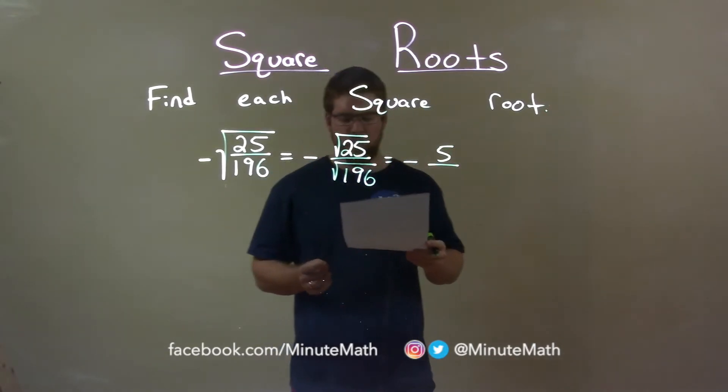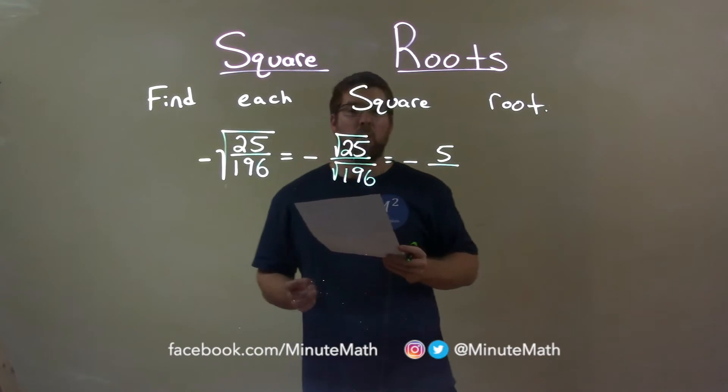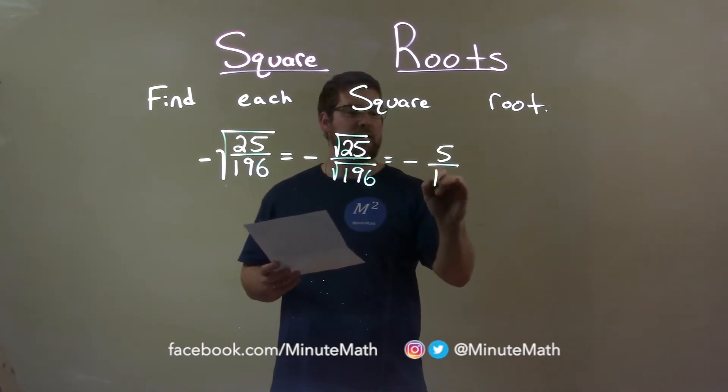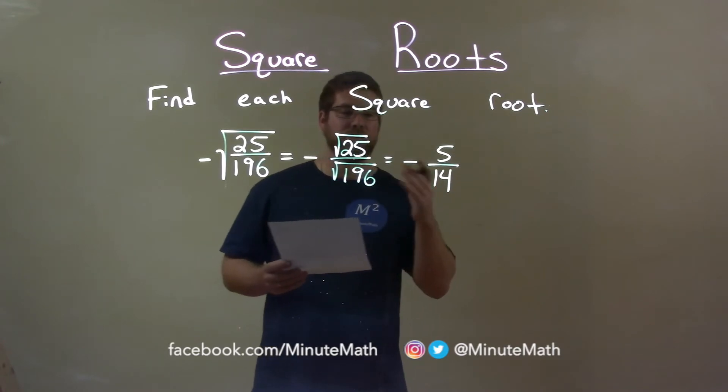Ask yourself the same question with 196. What number times itself is 196? And that's 14. So, the square root of 196 is 14.